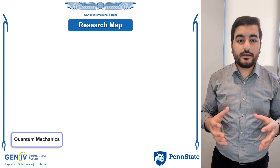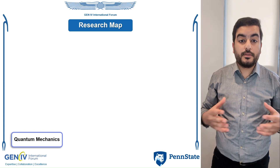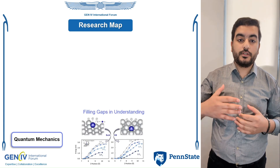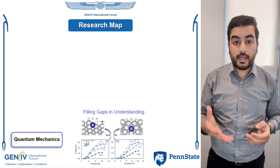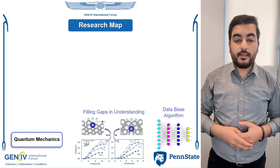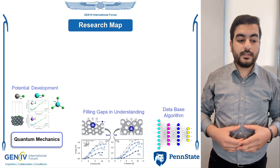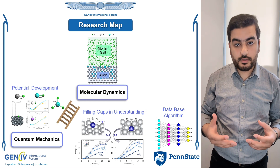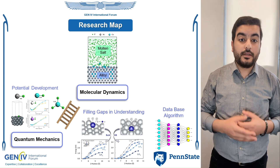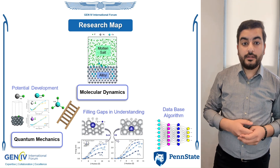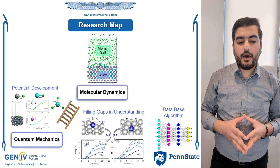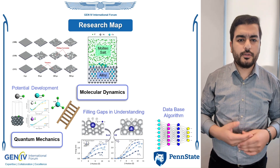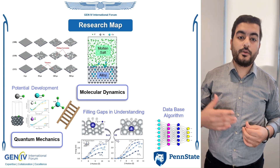We start with atomistic methods like quantum mechanics methods to understand the fundamental interactions that take place between the salt and the material. From that we can generate a lot of data that can later be used to build a model, and this model will enable us to simulate the molten salt corrosion at the atomic scale — something never before possible. This will allow us to see how the corrosion starts and evolves and how different factors like temperature and salt chemistry influence the corrosion rate.